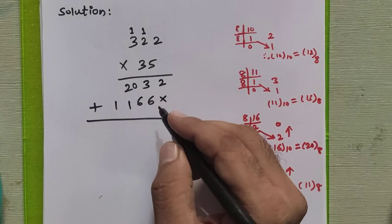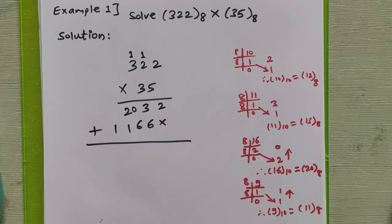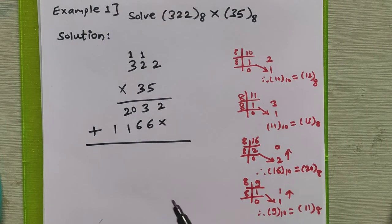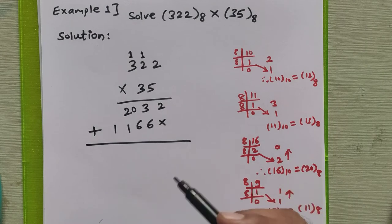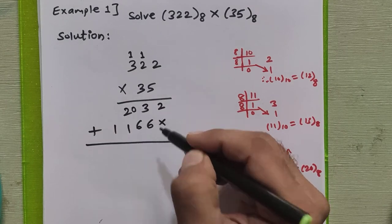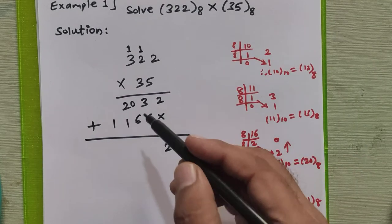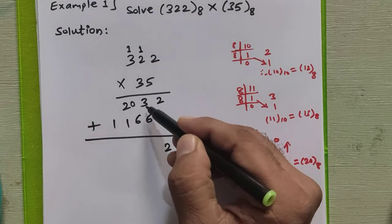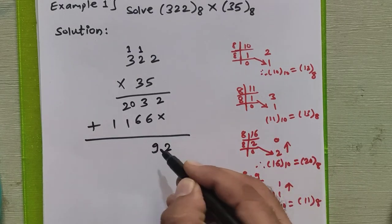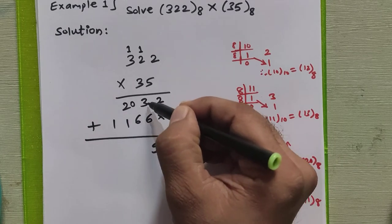To get the addition we use the octal addition rule without converting to any other base — as covered in a previous video. Adding: 2 plus 0 is 2, which is a valid octal digit. Now we add the next column: 6 plus 3 is 9. Since 9 is an invalid octal digit — the last valid digit is 7 — this exceeds the valid range.